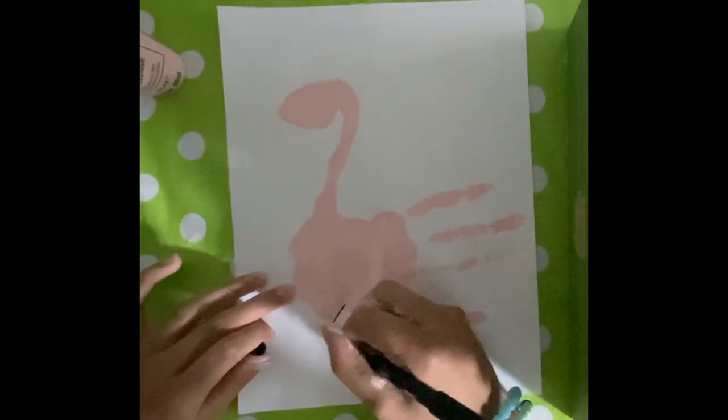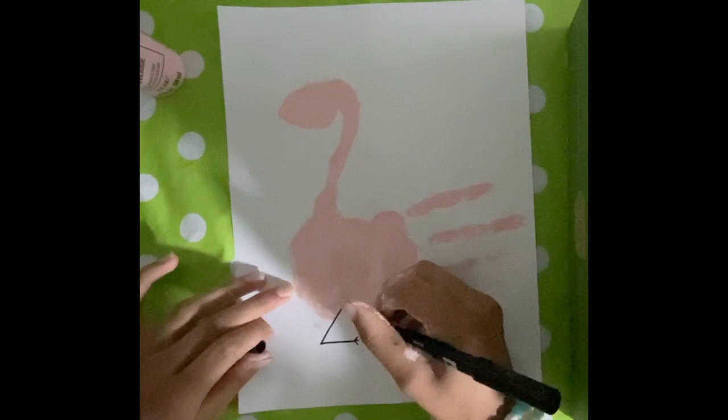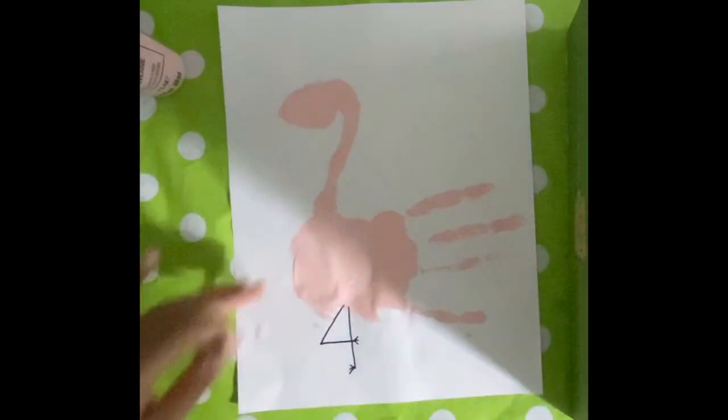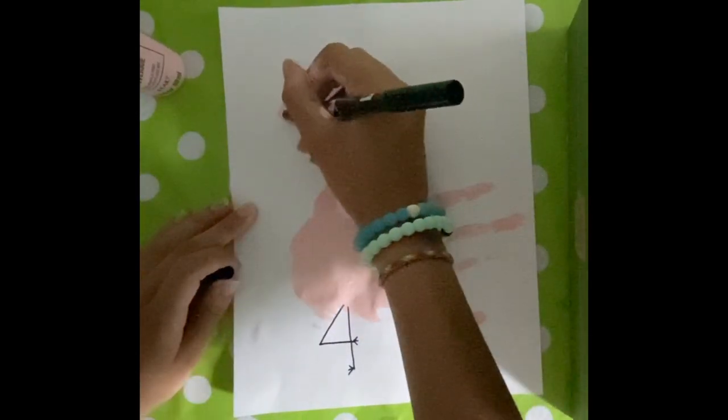Then grab your black marker to draw the legs and the beak. You can draw the legs however you want. I just chose to make one bent and one straight. For the beak, draw a crescent downwards.